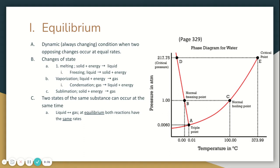We call it dynamic, which means always changing when two opposing changes occur at equal rates. That's the forward reaction and the backwards reaction.